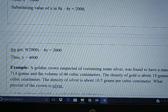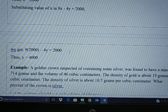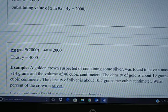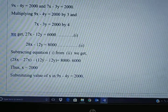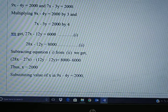And x value is 2000, so 9 times 2000 minus 4y equals 2000. When you equate this you get y equals 4000. So you got the value of x and y by eliminating one variable.